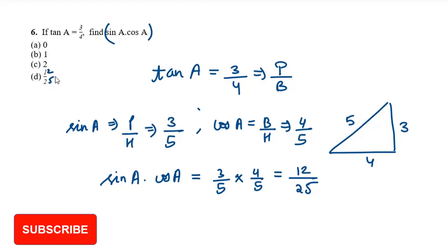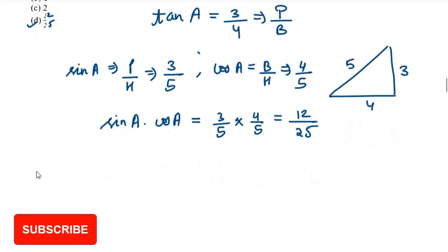Taking the product: sin A times cos A equals 3 by 5 multiplied by 4 by 5, which gives 12 over 25. That is option D.